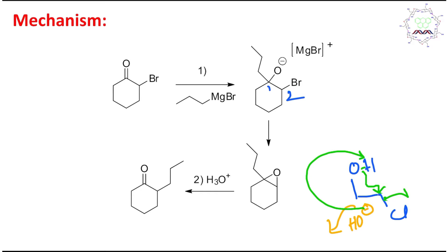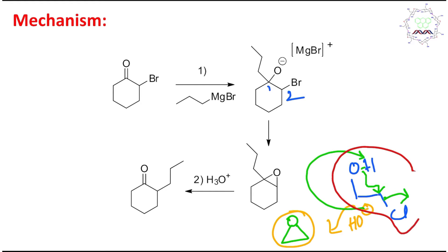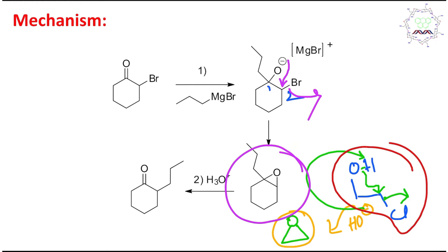If you treat this chlorohydrin with a base like sodium hydroxide or potassium hydroxide, it first abstracts the proton and produces O-minus. This negative charge, through an intramolecular SN2-type reaction, attacks and the chlorine leaves, producing an epoxide. This is actually a very good way to store epoxide, since ethylene oxide is a gas at room temperature but the halohydrin is liquid.